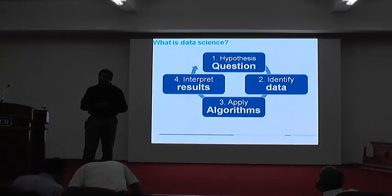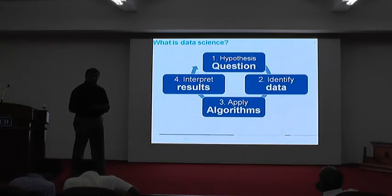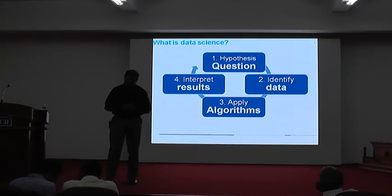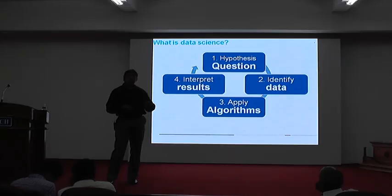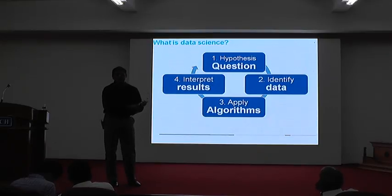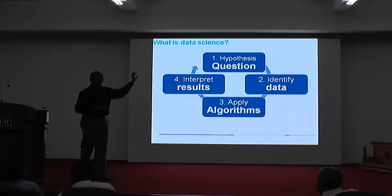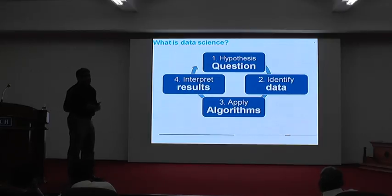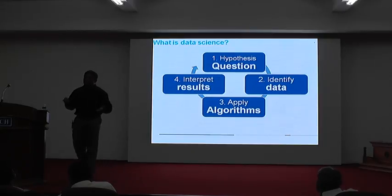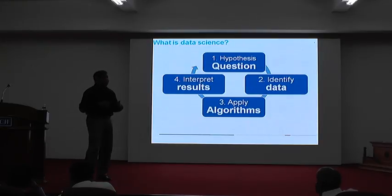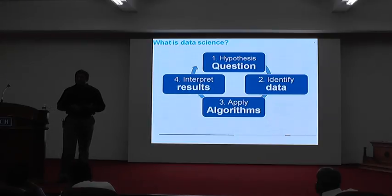In data science, once you have a question, you look at all the possible data you can get. For epileptic seizures, just knowing what medicine a person bought over a period of time may not be sufficient — you might want real-time data like their heartbeat every minute or second. Once you have the right data, you apply algorithms, and the most critical part is to interpret the results to see whether they can be realized.